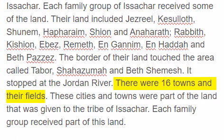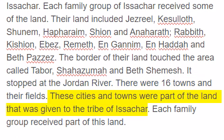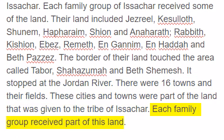There were sixteen towns and their fields. These cities and towns were part of the land that was given to the tribe of Issachar. Each family group received part of this land.